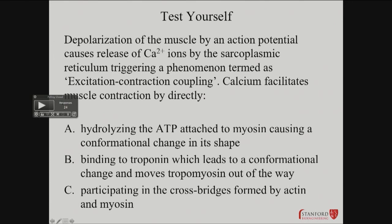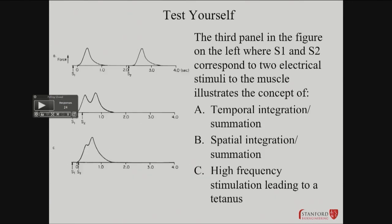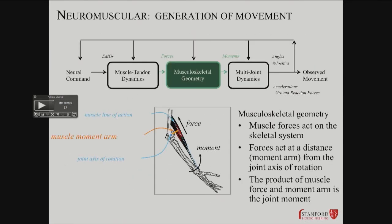By the way, troponin is also relevant to cardiac muscle. You actually have a loss of troponin into the blood — that's one way you can detect heart attacks, as damage to heart muscle leads to release of troponin. That's actually one of the most sensitive current tests for cardiac ischemic heart attack.